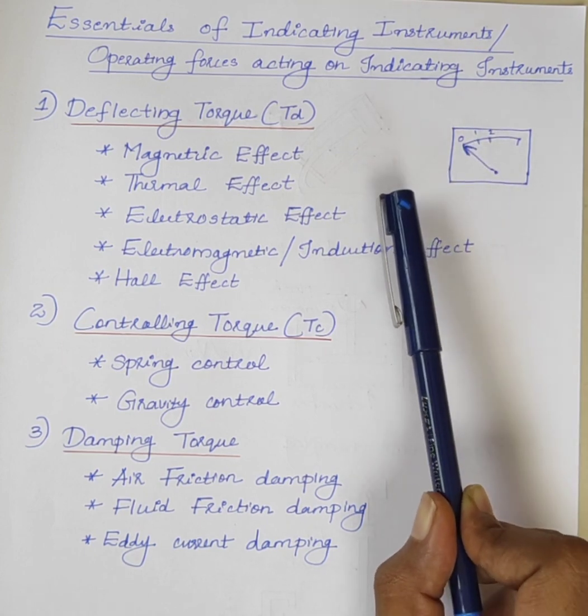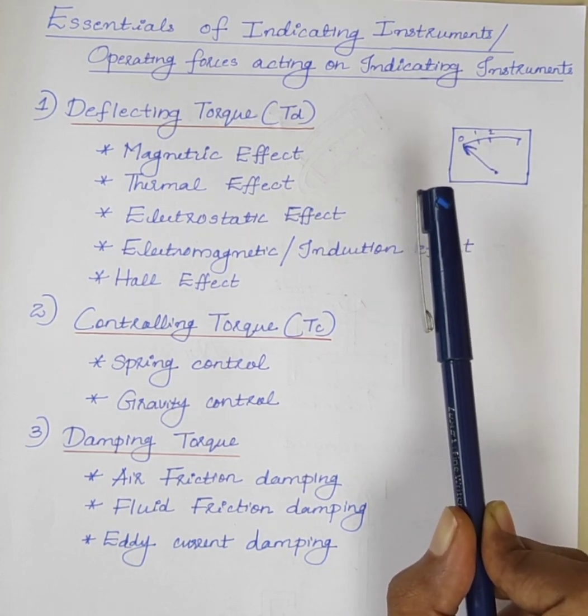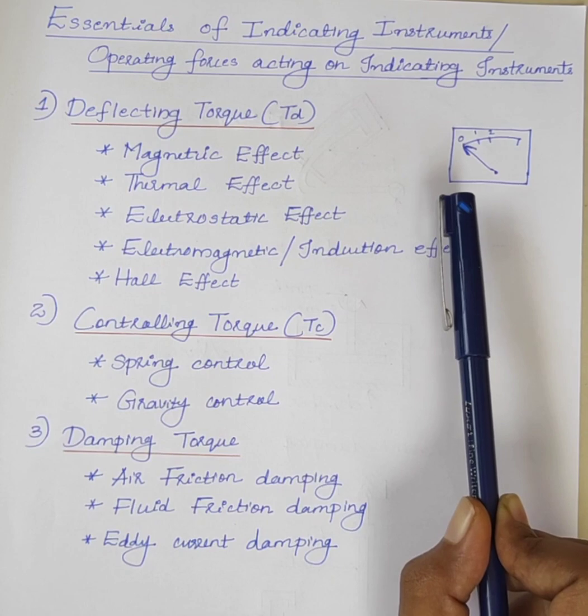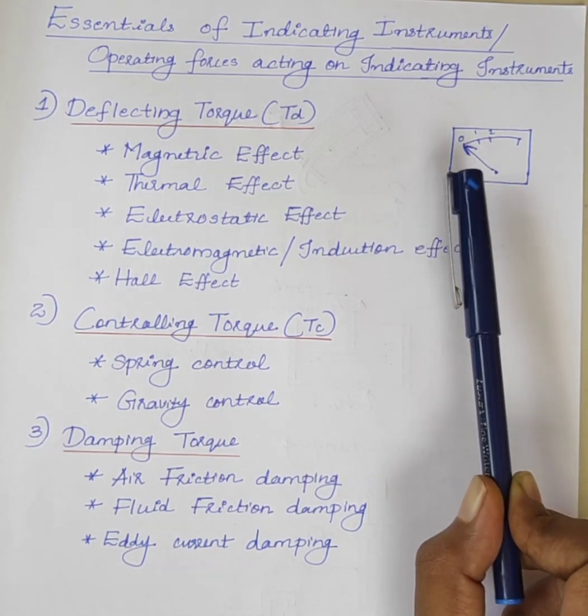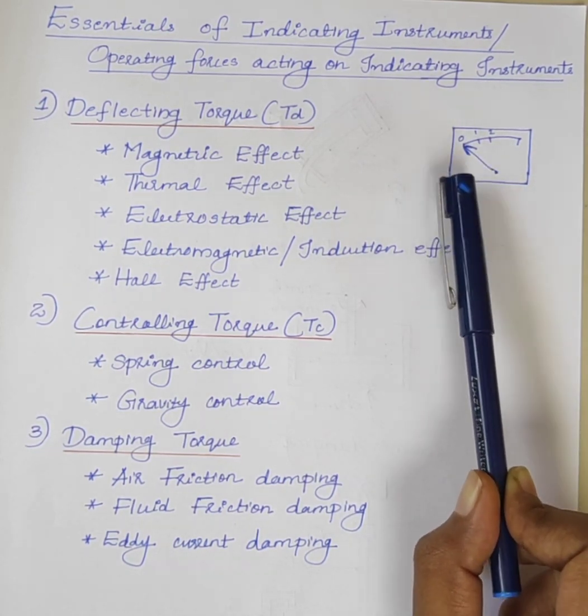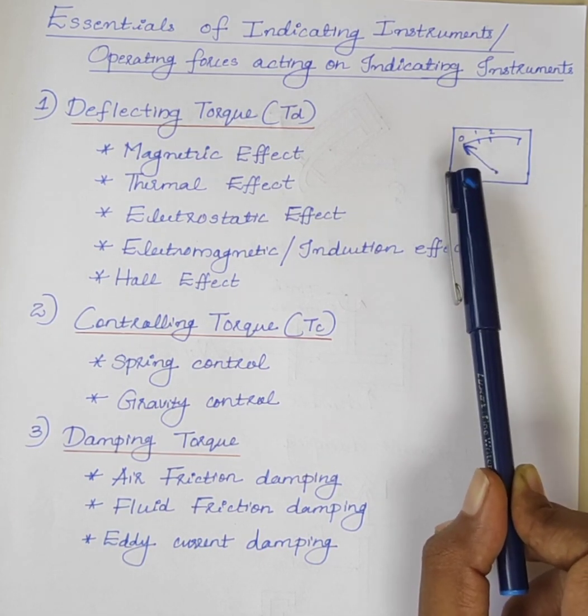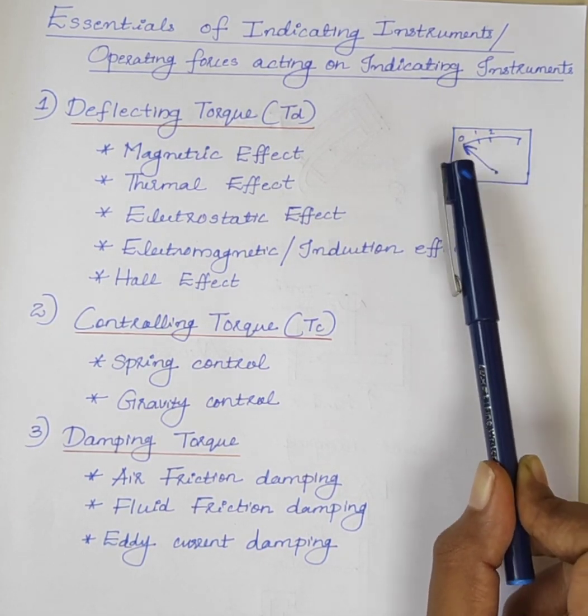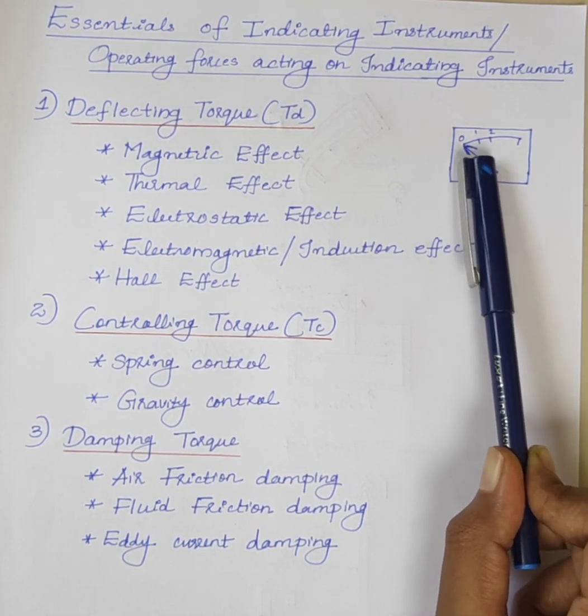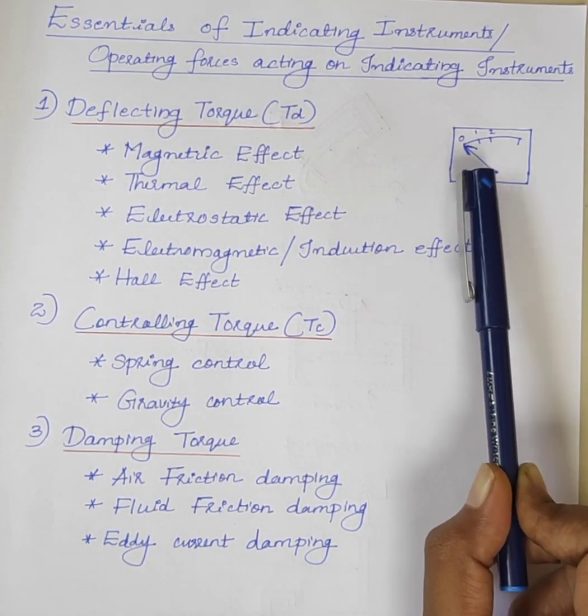The system producing Deflecting Torque is called a moving system. So we can say that the deflecting system converts electric current or voltage into mechanical force, that is movement of the pointer.